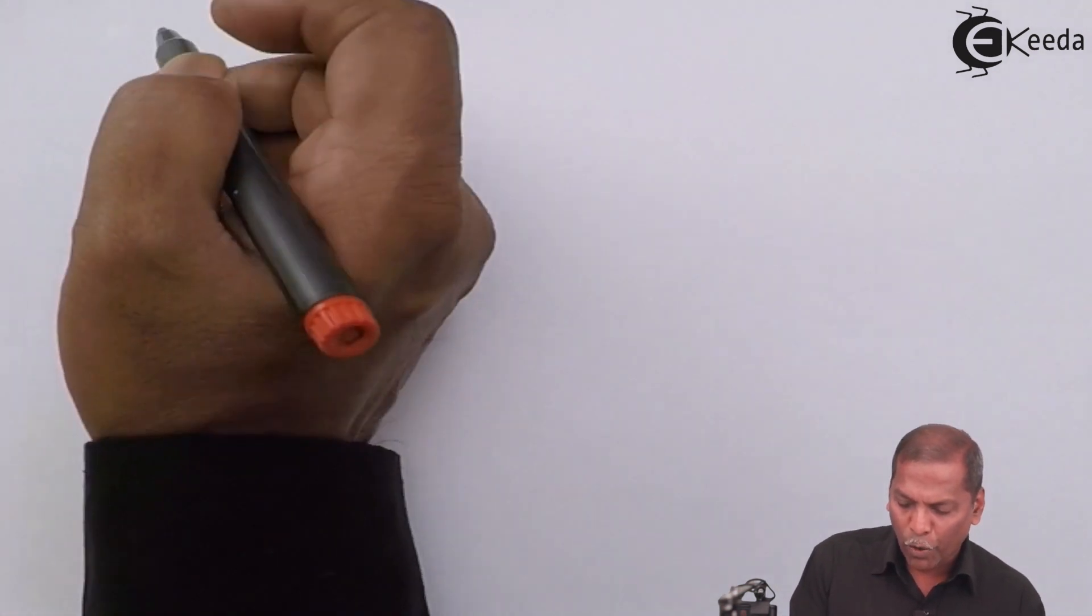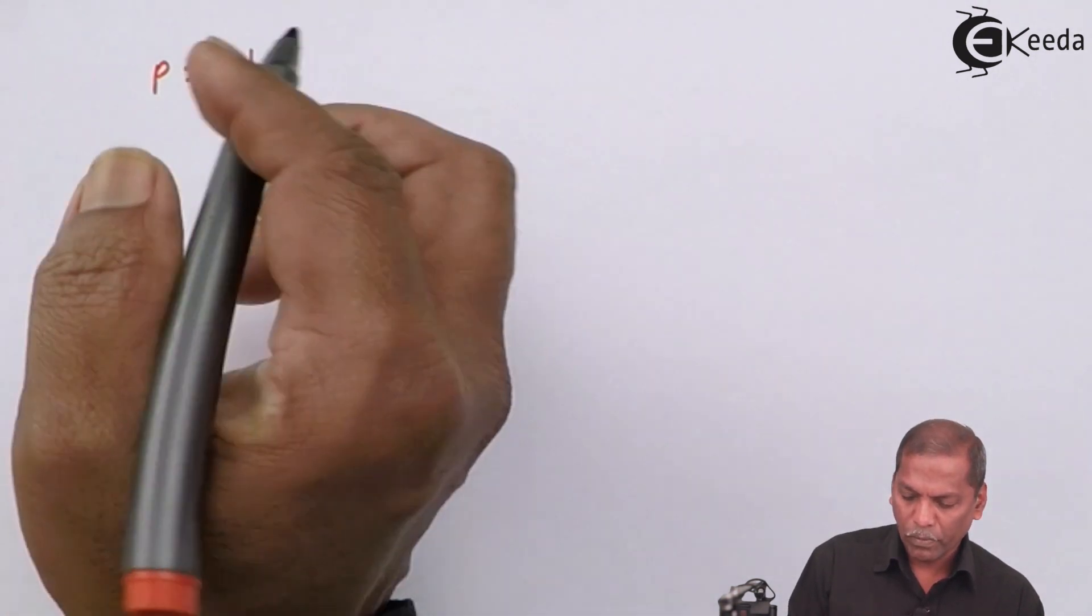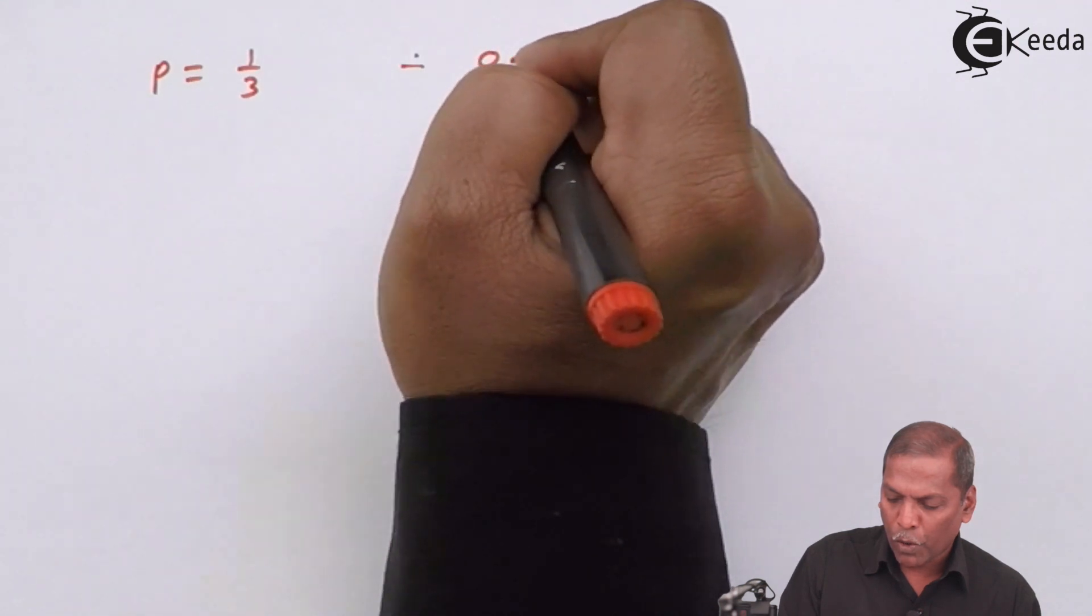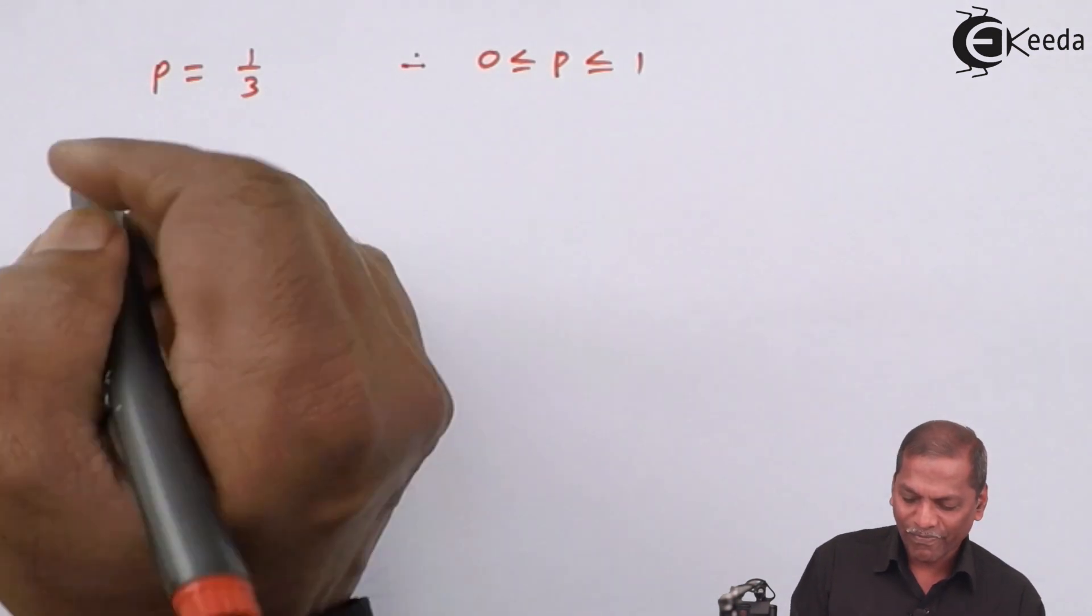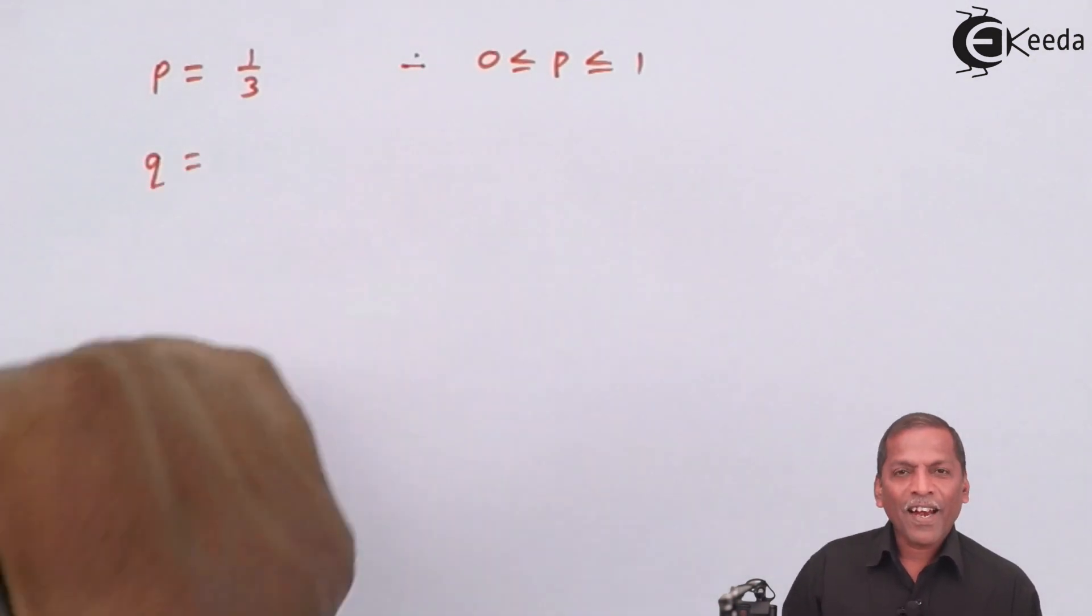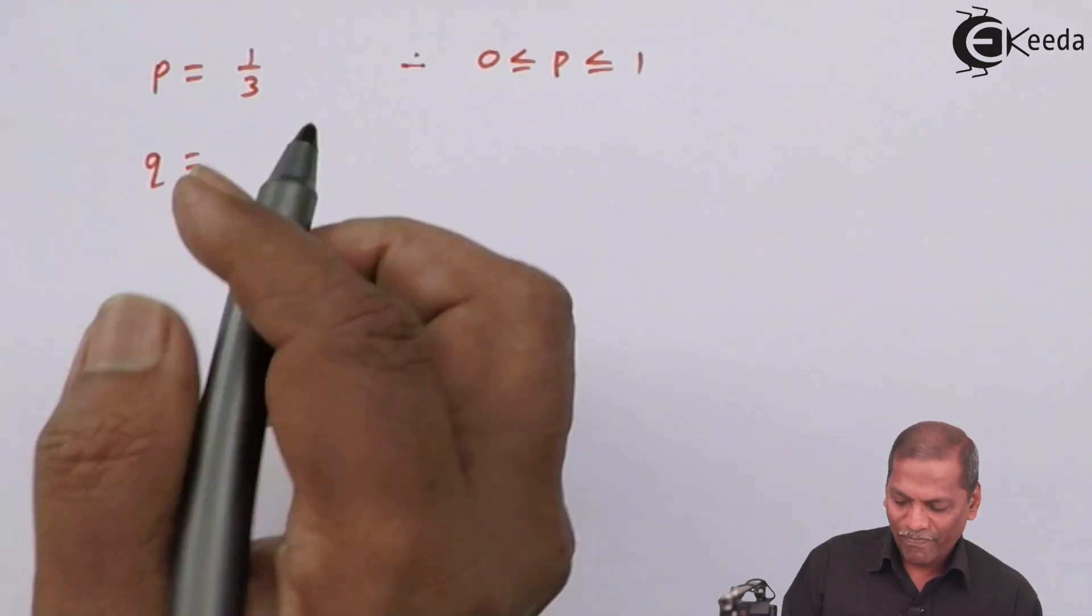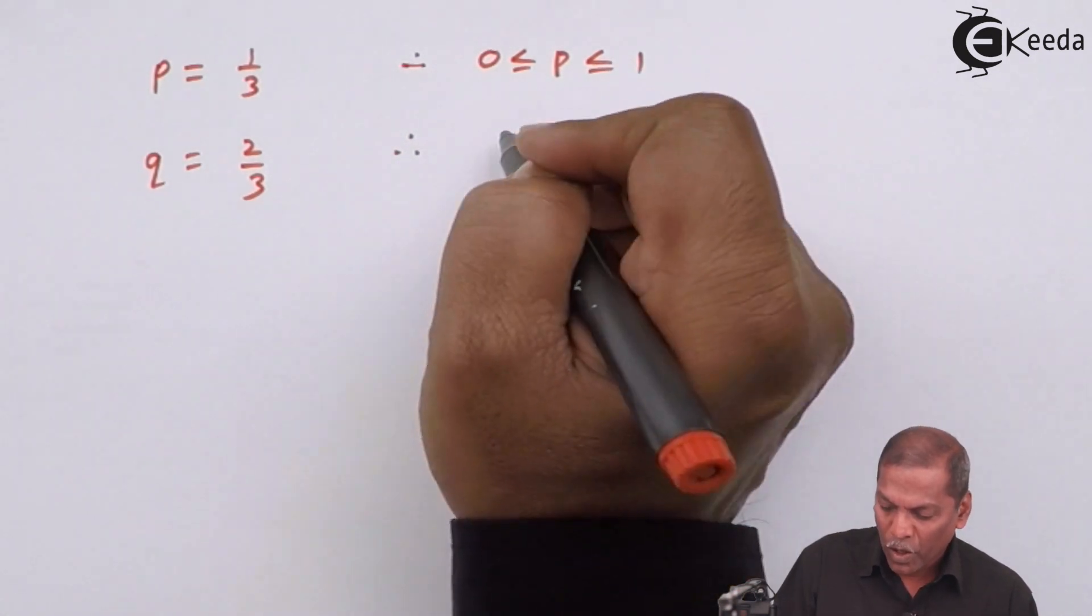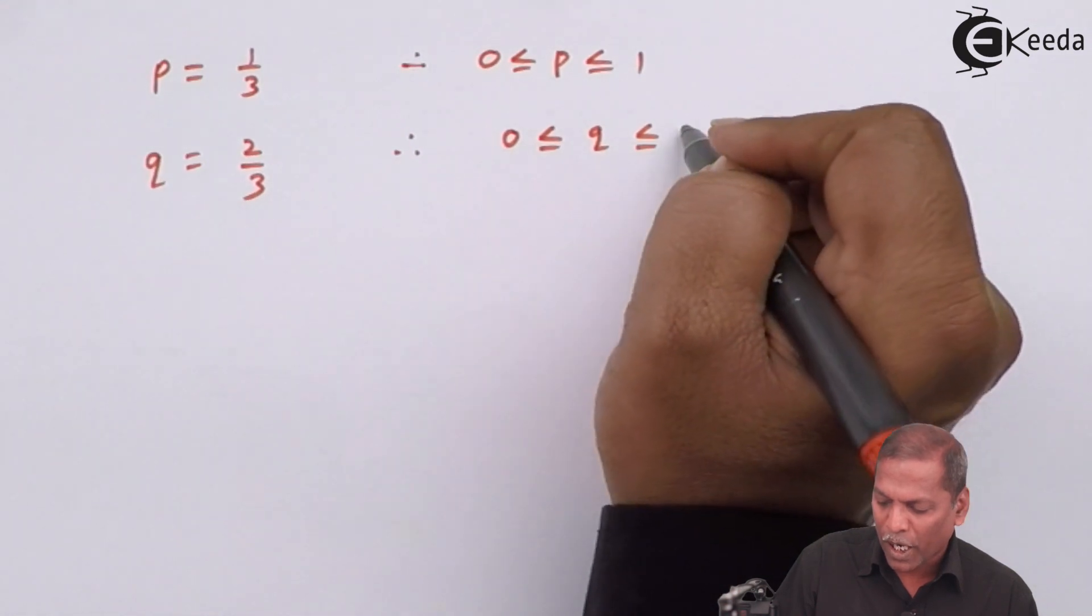So in this way, we get the values that p is equal to 1 upon 3. Therefore, 0 less than equal to p less than equal to 1. At the same time, q is equal to 2 upon 3. Therefore, 0 less than equal to q less than equal to 1.